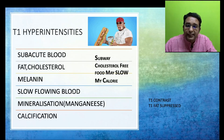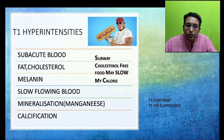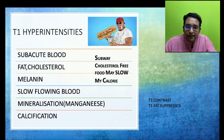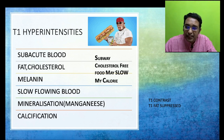It is easy to zero in on T1-weighted hyperintensities. Examples include subacute blood, fat, cholesterol, melanin, slow-flowing blood, and mineralization such as manganese, copper, and calcification. A mnemonic for this is 'Subway cholesterol-free food may slow my calorie': Subway = subacute blood, cholesterol, fat, food = melanin, slow-flowing blood, minerals like manganese/copper/iron, and calorie = calcification. This same T1 sequence is also used for contrast-enhanced and fat-suppressed images.